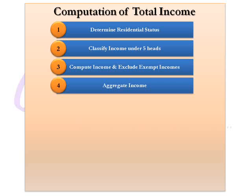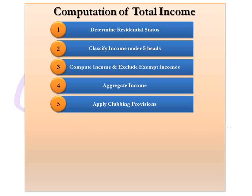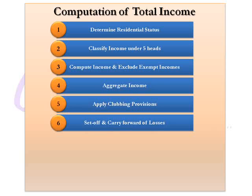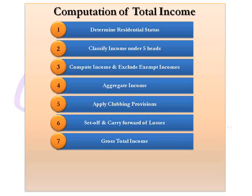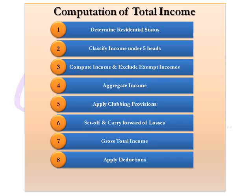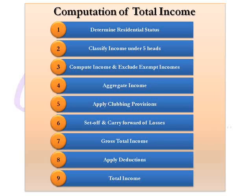Next, aggregate the incomes calculated under the five heads. Then apply the provisions of clubbing of income of other persons. Set off any losses of the current year or losses of previous years properly carried forward, and carry forward any loss of the current year not able to be set off to next years. What we get after this is called gross total income. Apply the reductions from income described under Chapter 6A, and the remainder is taxable income which shall be subject to tax.